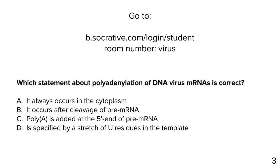Final question: Which statement about polyadenylation of DNA virus mRNA is correct? It always occurs in the cytoplasm; it occurs after cleavage of pre-mRNA; polyA is added at the 5' end; or it is specified by a stretch of U residues in the template. The answer is B — it occurs after cleavage of pre-mRNA. It's not added at the 5' end; it's added at the 3' end, and it's not specified by U residues.